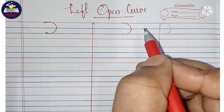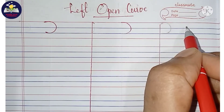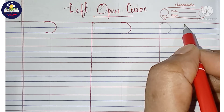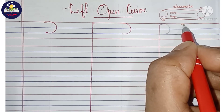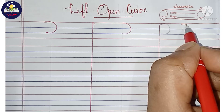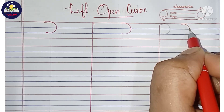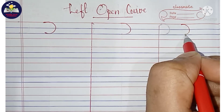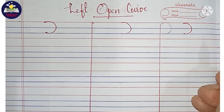This is left open curve. Again I am showing how to write left open curve: start from the top line, make a left open curve moving towards the right, touching the third line. This is left open curve.